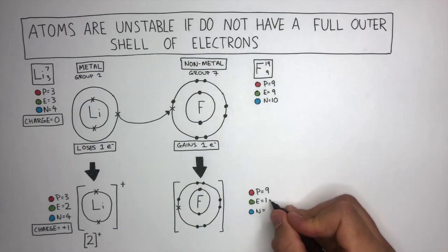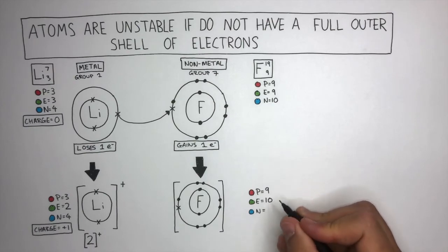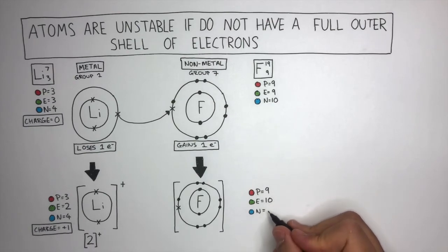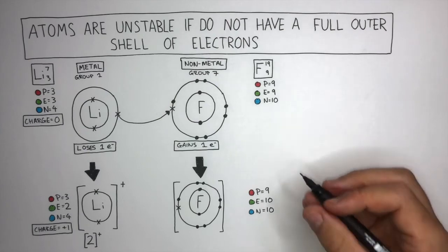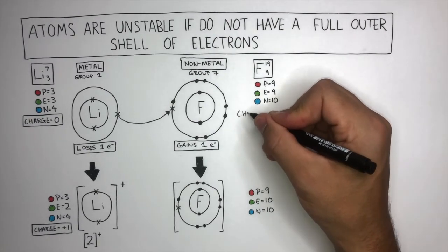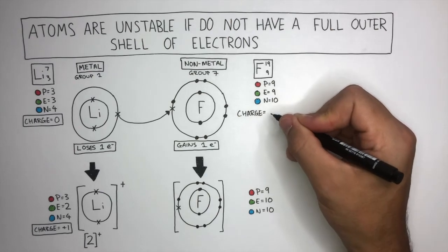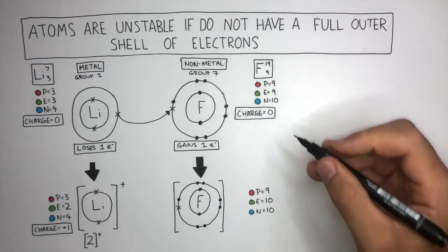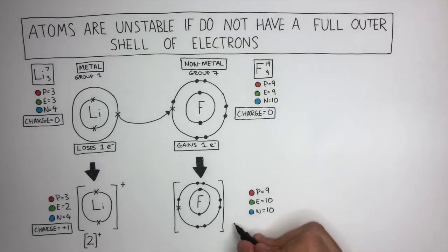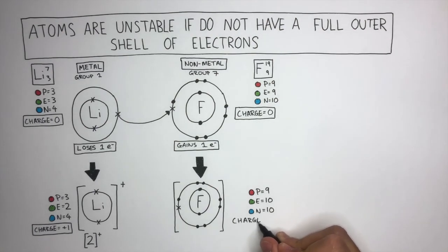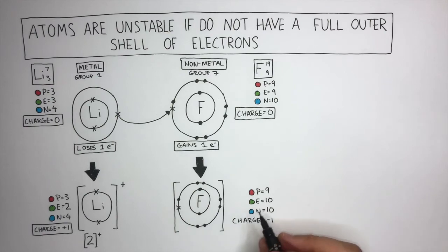This means we now have 10 electrons. Nothing has happened to the number of neutrons, so there are still 10 neutrons. The charge on a fluorine atom is 0 because the 9 protons cancel out the 9 electrons. The charge on a fluoride ion is minus 1, because the fluoride ion has 1 extra electron compared to the protons, so the charge is minus 1.